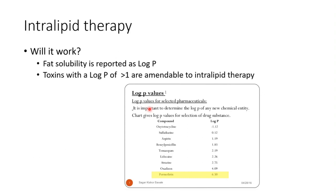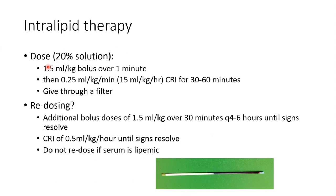When giving intralipid, the most common protocol is an initial bolus of 1.5 mls/kg over one minute, then 0.25 mls/kg/minute for 30 to 60 minutes, administered through a filter to prevent fat emboli. For patients still affected, consider redosing after four to six hours. In very severe cases, consider a CRI. Always check a PCV/total solids before redosing — not for the values themselves, but to assess lipemia. If the serum is very lipemic, don't redose, as you risk pancreatitis. Only redose if the serum has started to clear.